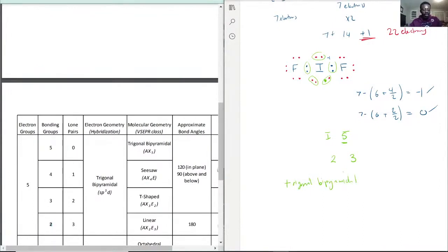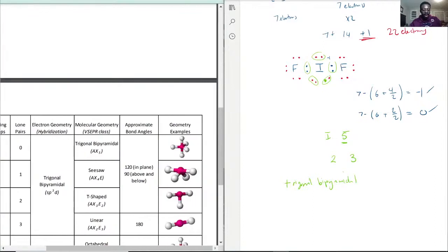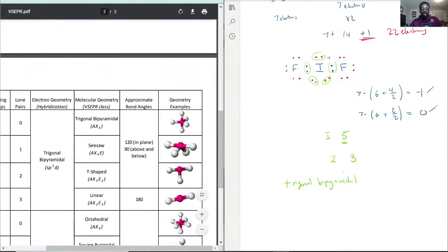Let's go over to our VSEPR table here. It's all the way here for the electron groups five. We have this two, so the name in general for the electron geometry, electron pair geometry, is trigonal bipyramidal.